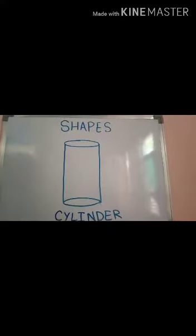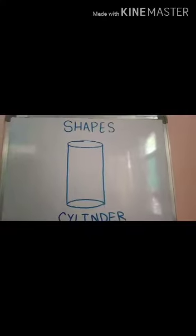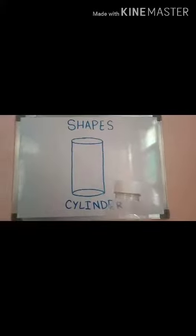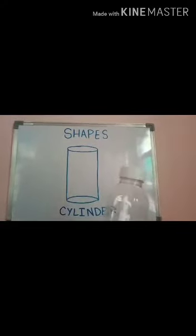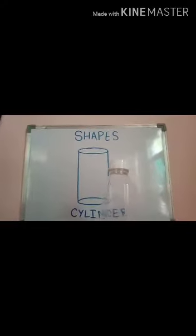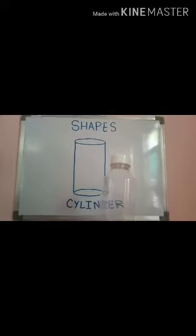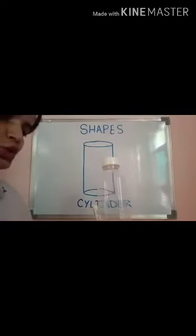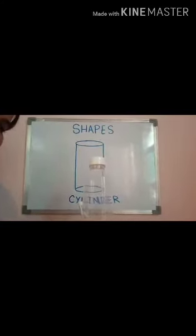Let's see another shape — cylinder. This is a cylinder, and this is a bottle; it looks like a cylinder. Let's figure out its vertices — it has no vertices. Let's figure out its edges — it has two edges.